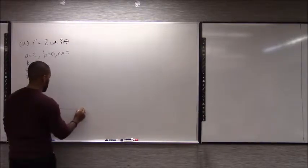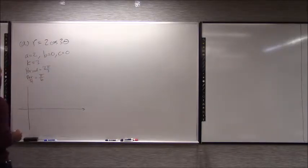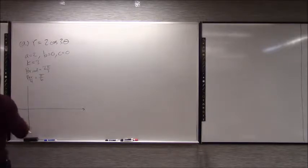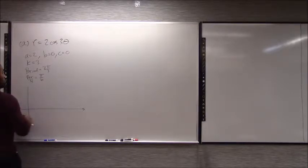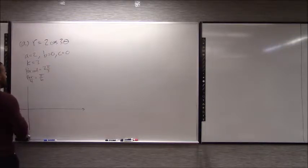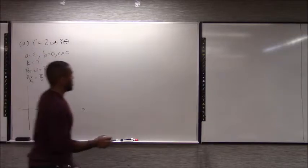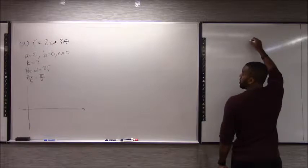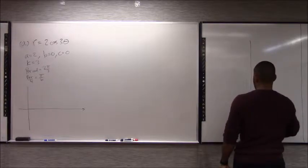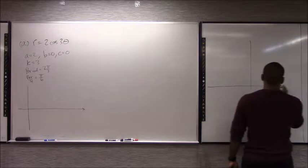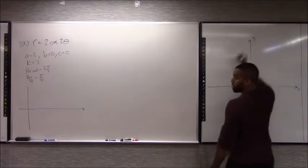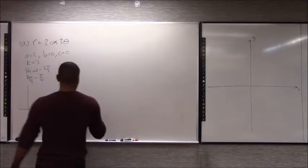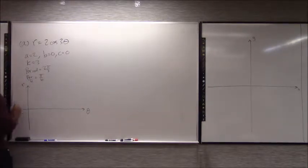The first point would be at (0, 2). You're drawing on the x-y coordinate? The initial graph isn't in x-y — it's in r-theta. The initial graph is in r-theta. So it's theta versus r. When theta is 0, the radius is 2.